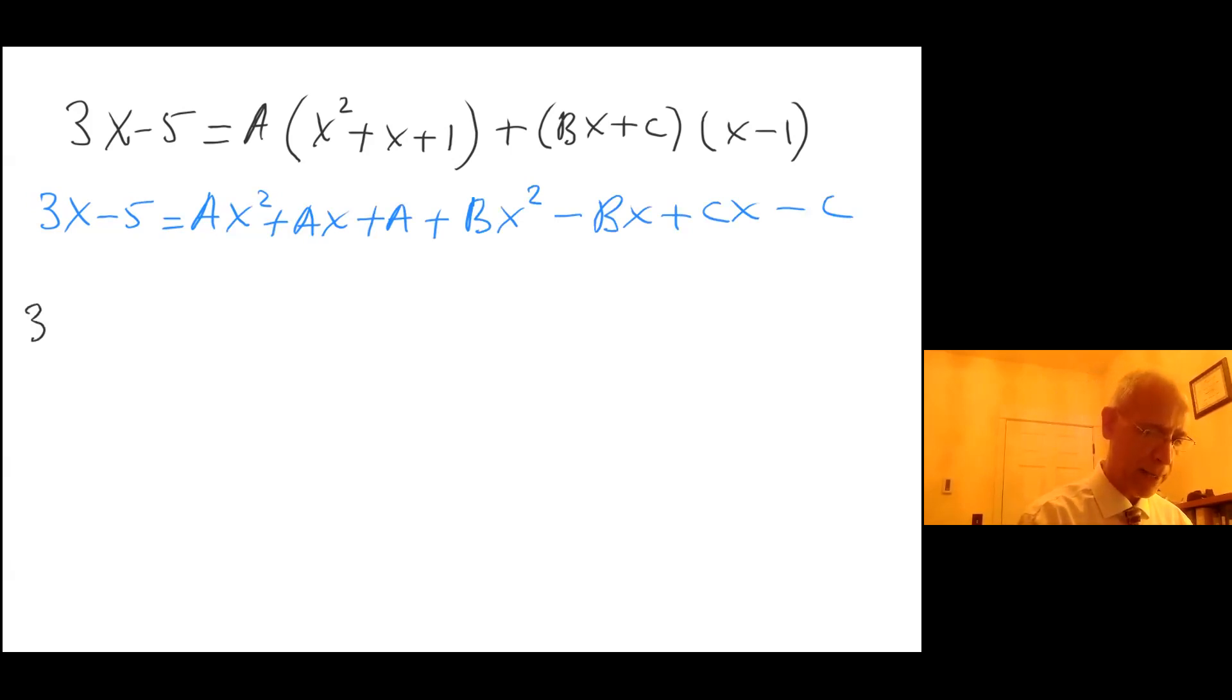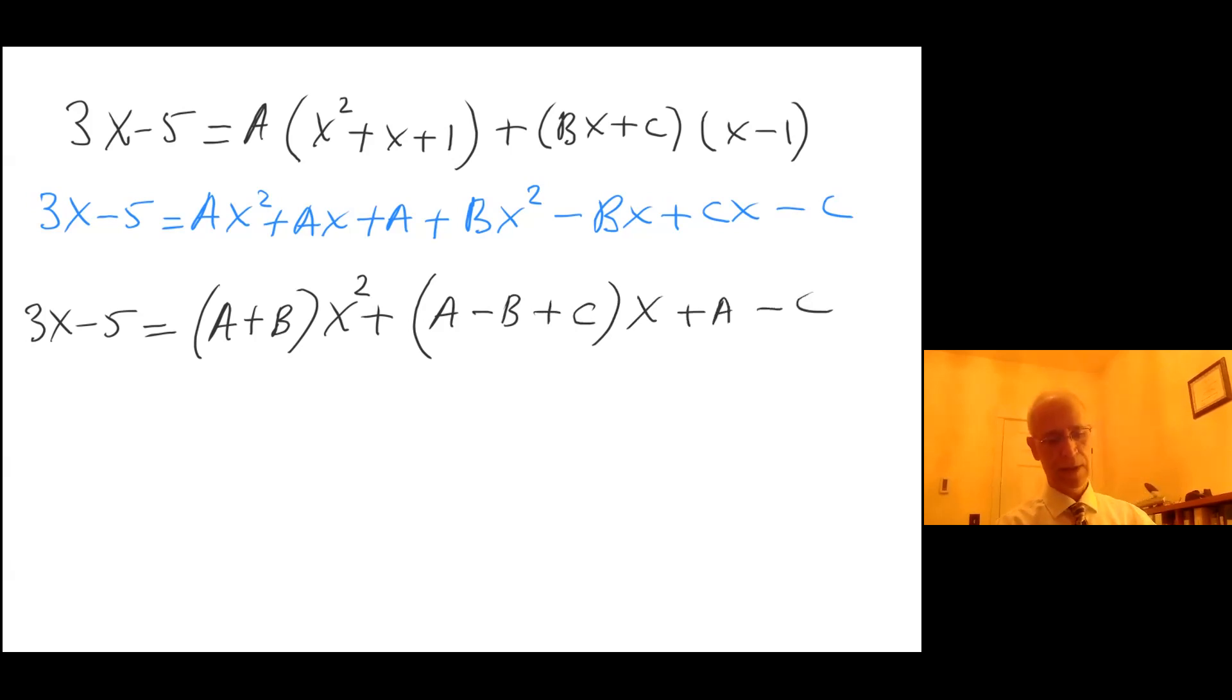So I'm going to get 3x minus 5 equals (A plus B)x squared plus (A minus B plus C)x plus (A minus C).